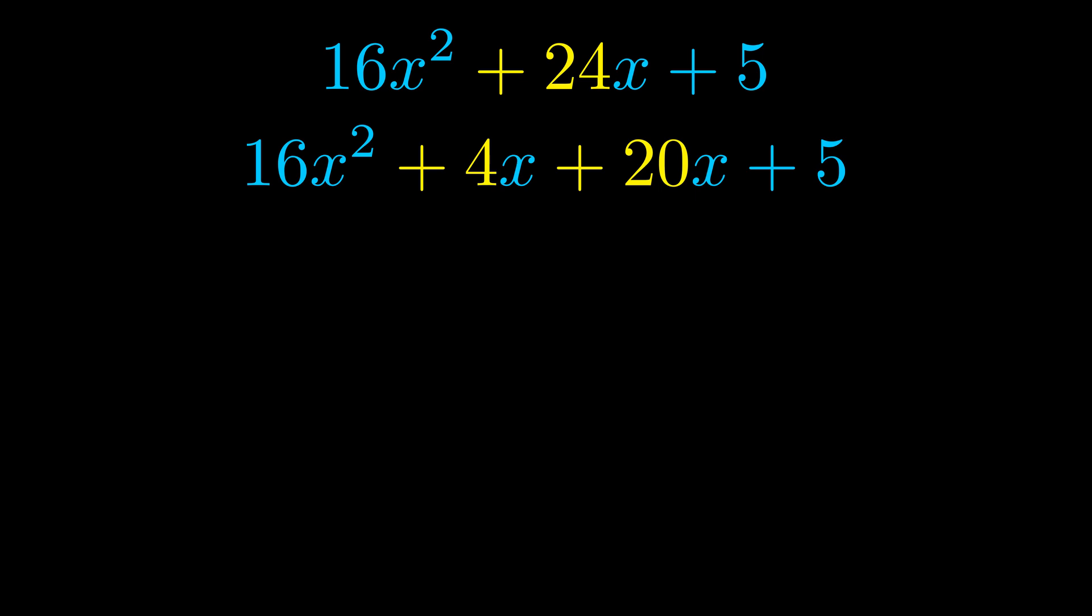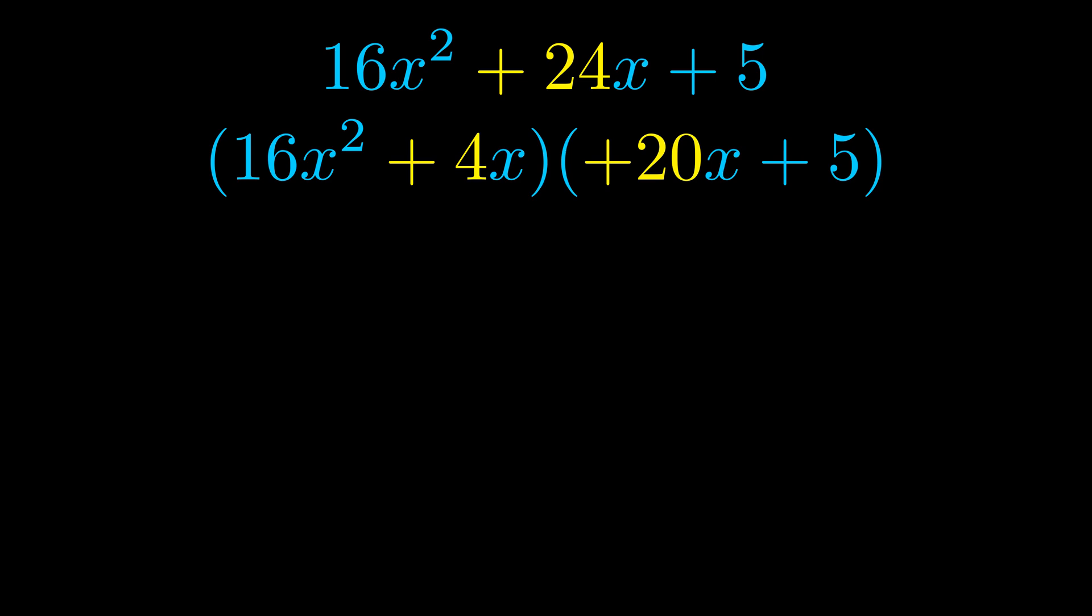Once we've done this we go ahead and we put parentheses around the first term and the last term. And we do that so that we can take the greatest common factor out of both terms. We can see the greatest common factor is now outside in green.